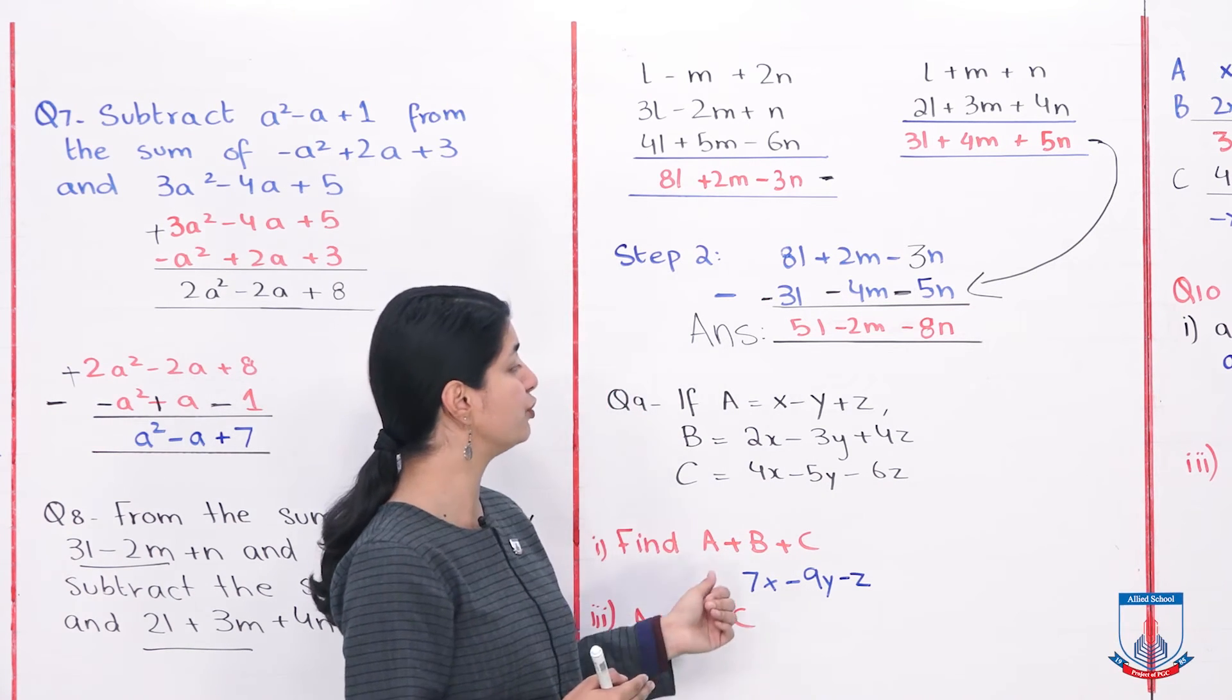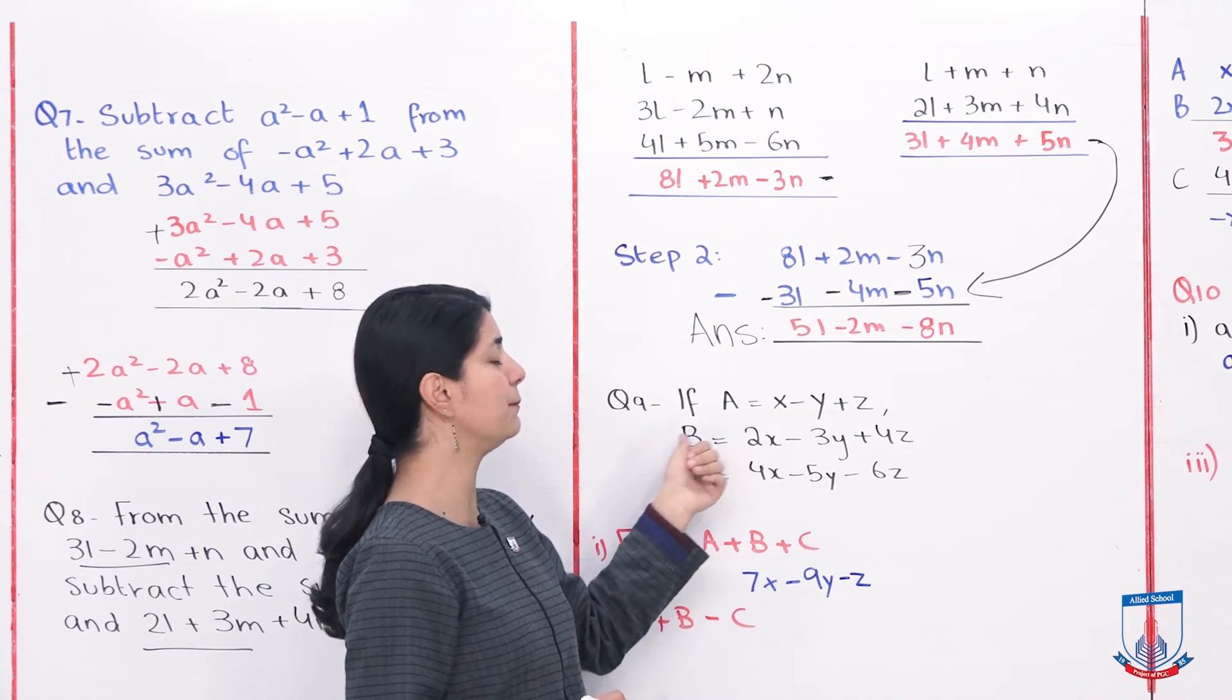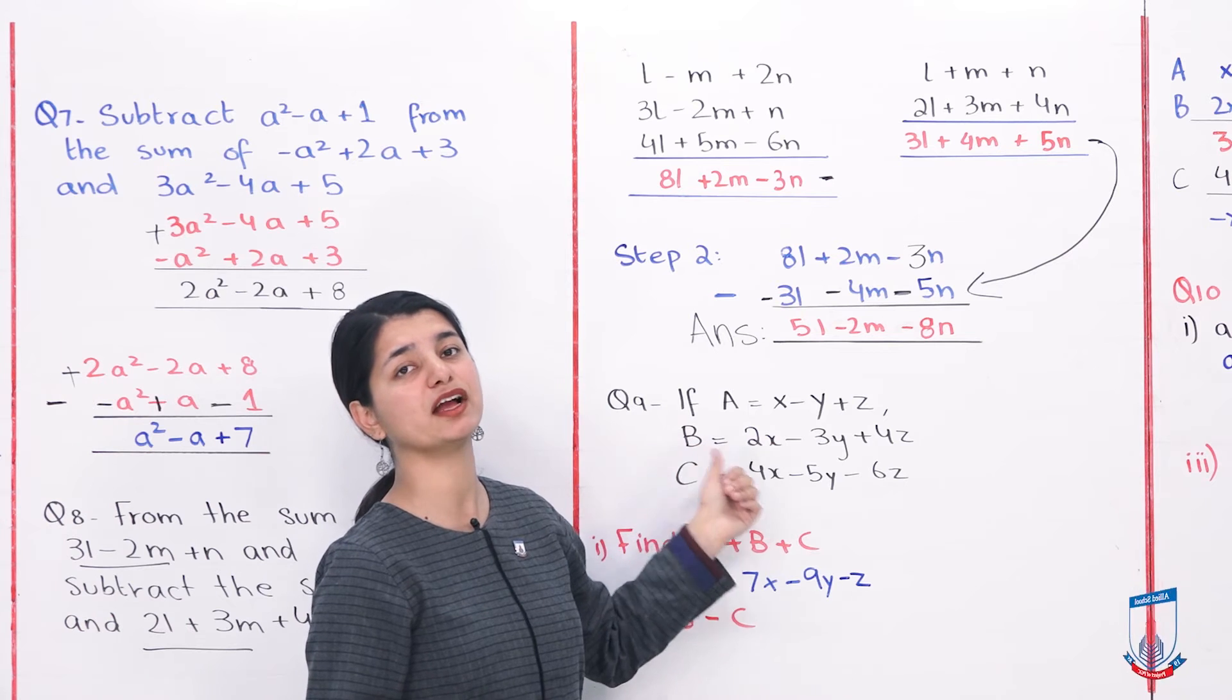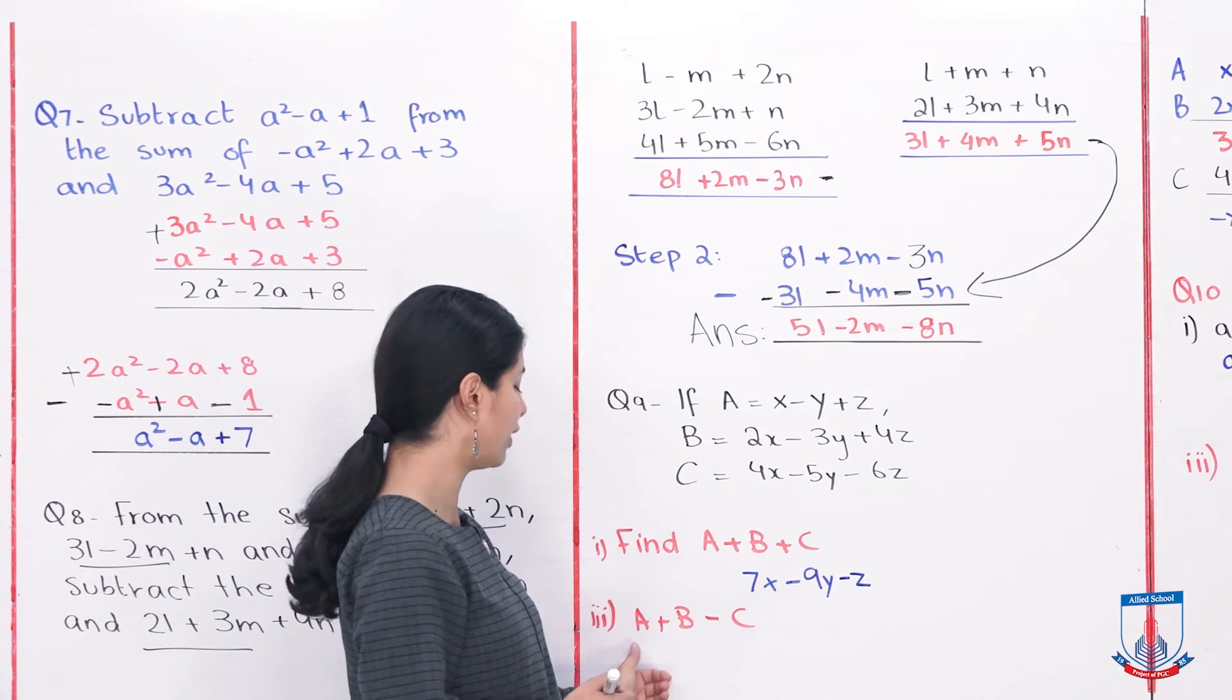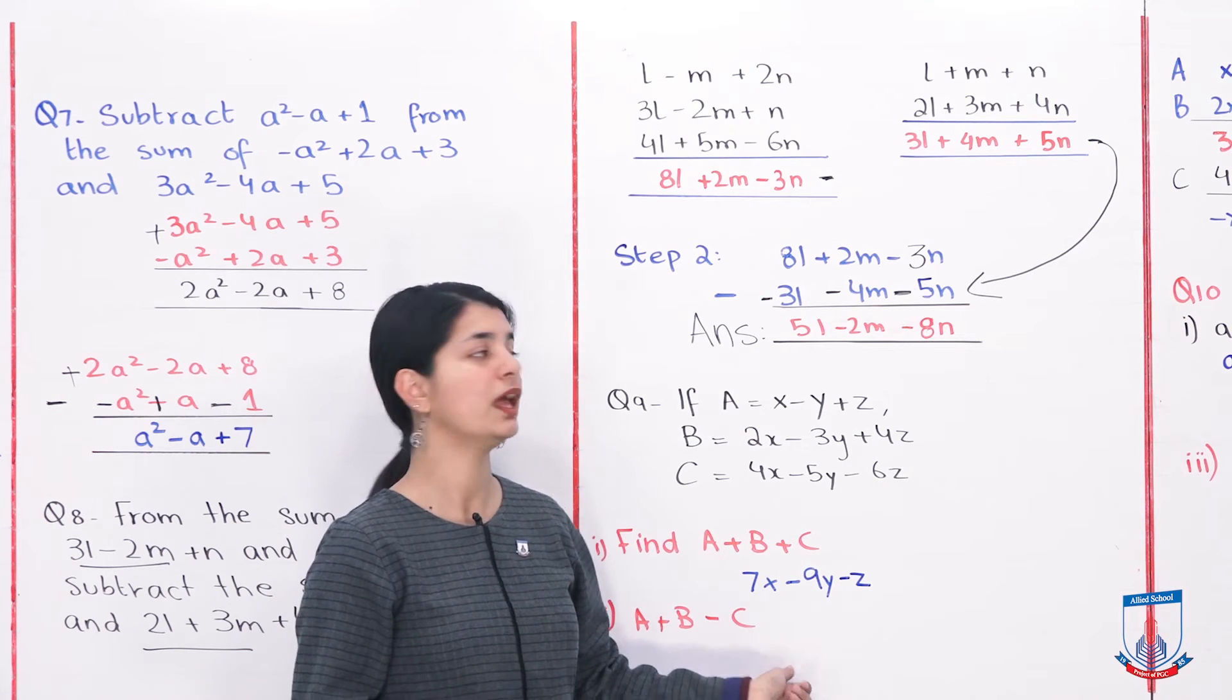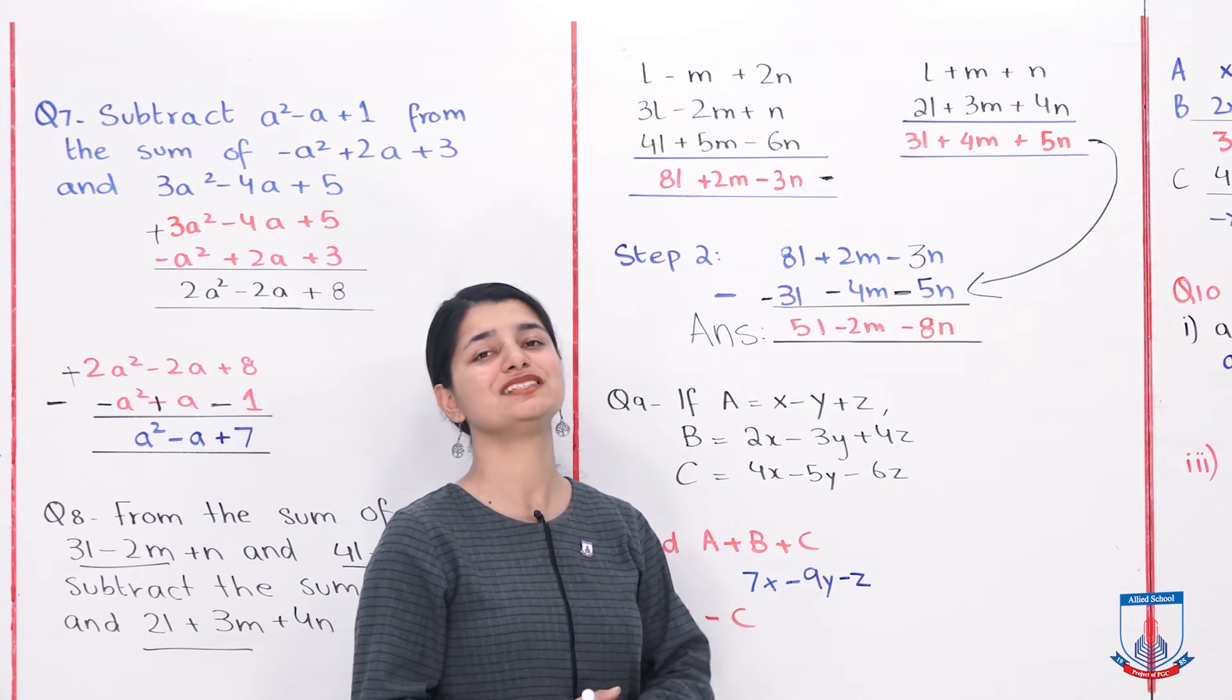In the second part, what they're asking you to do is A minus B plus C. So we will subtract B from A, whatever answer comes, we will add C to it. And the third part also let's do it together, which is A plus B minus C. We have to add A and B, we have to subtract C. Let's go see how to do this.